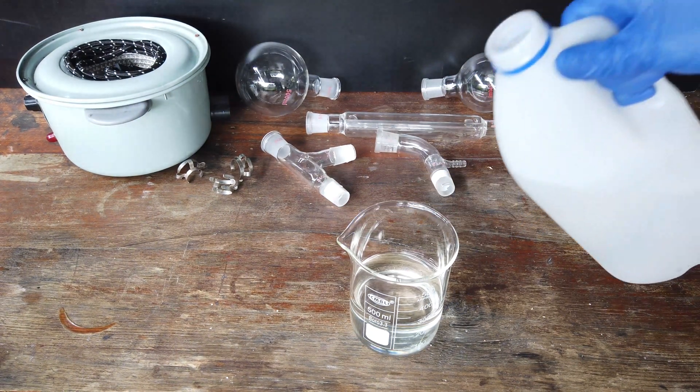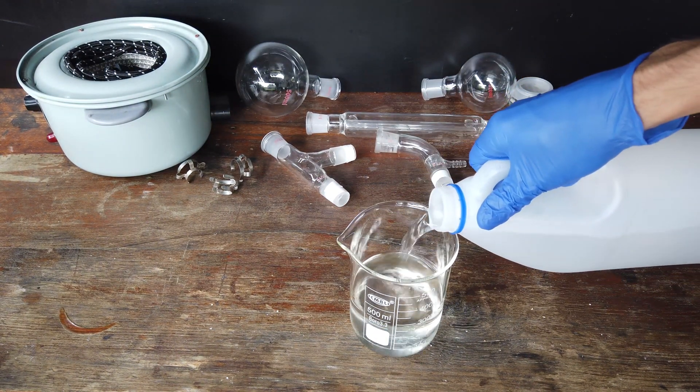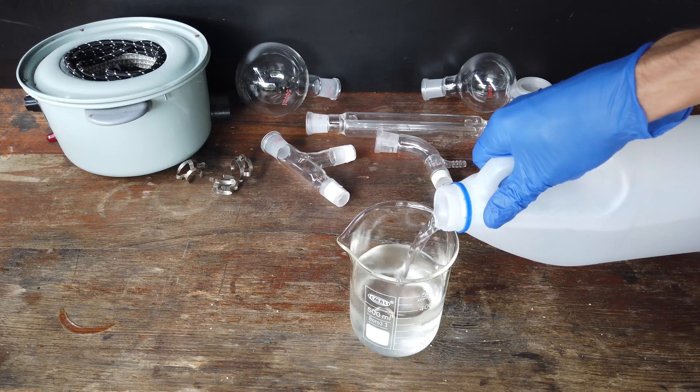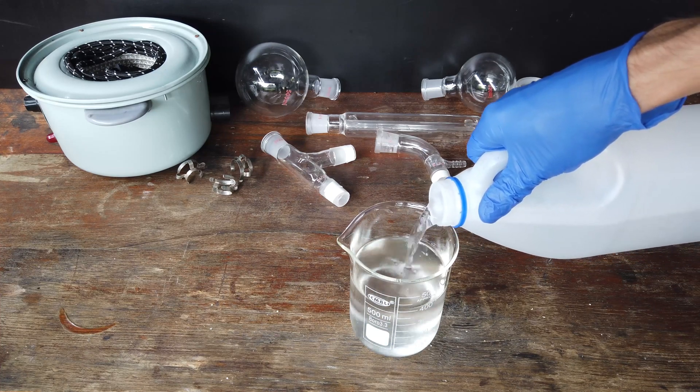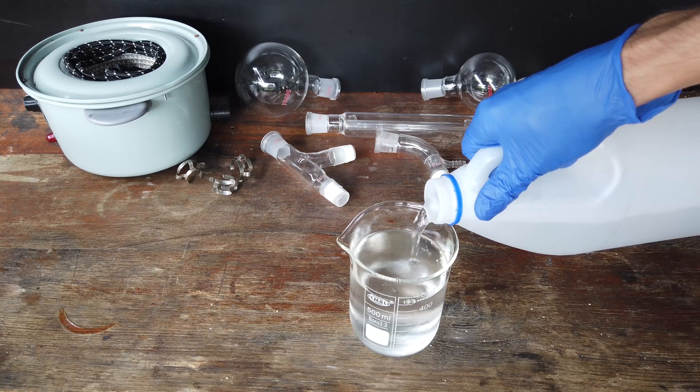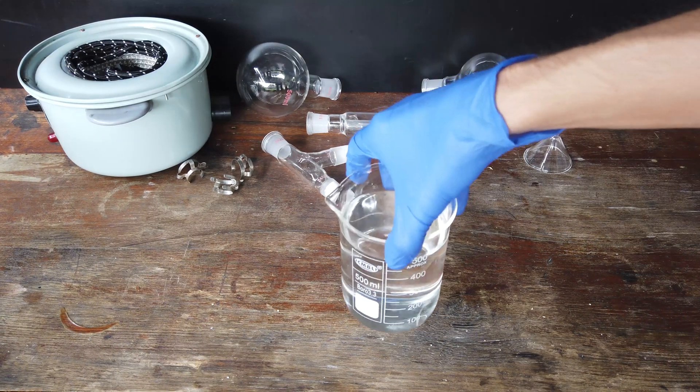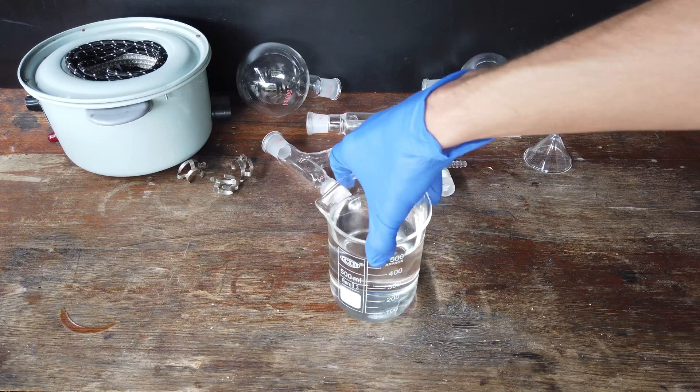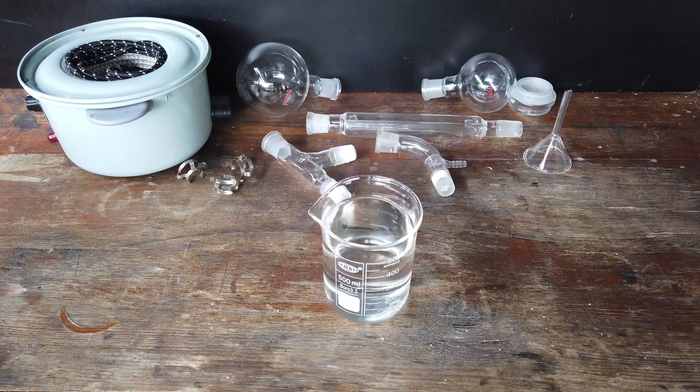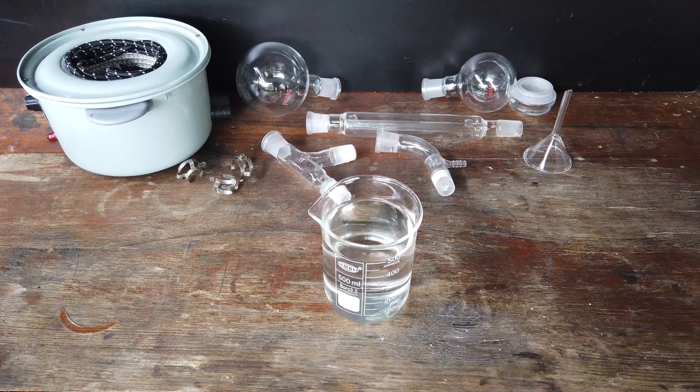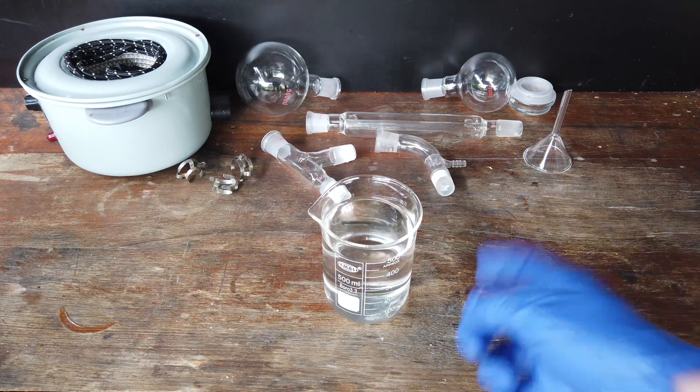Anyway, then I'm just going to top it up to 500 milliliters with distilled water. Not that this water actually needs to be distilled, seeing as we're about to distill it anyway, but that's what I'm going to do. And there we are. That should be about the concentration of the azeotrope ready to distill. If it's not exactly the right concentration, it shouldn't pose too big of an issue.